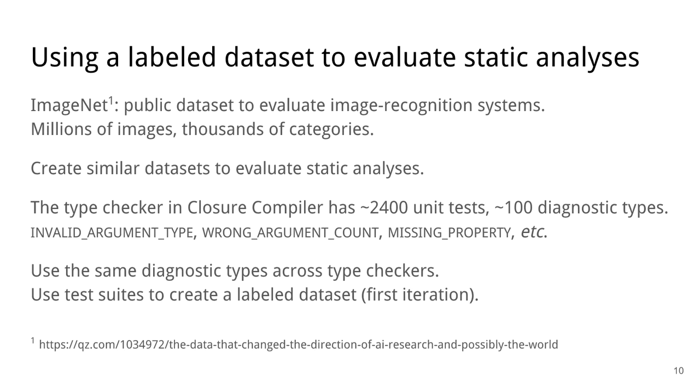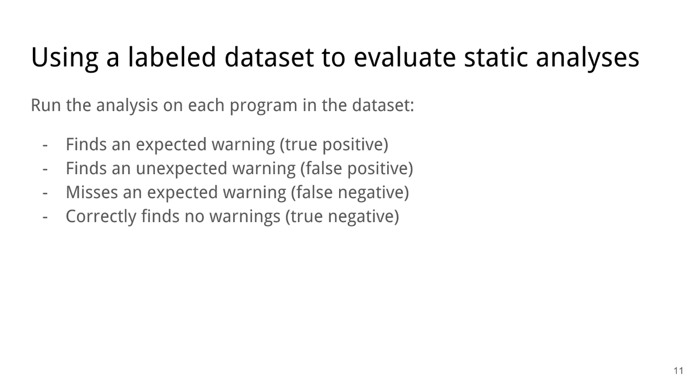So if we had such a data set, then if we wanted to evaluate a type checker, we would run it on each program in the data set. And then, if we find a warning that was expected in the ground truth, that's a true positive. If we find a warning that was not expected, that's a false positive. If we miss a warning that was expected, that's a false negative. So that's a place where we are unsound. And if we correctly find no warnings, that's a true negative.